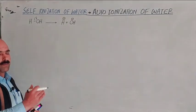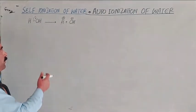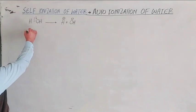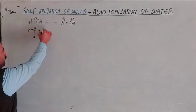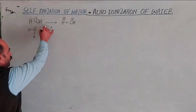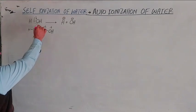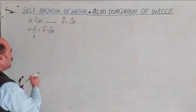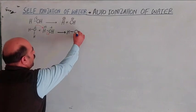Now, in one mole of water there are eighteen grams, and in one mole there is Avogadro's number of water molecules. Not all of them ionize simultaneously. Consider two water molecules. Due to polarity, hydrogen is partial positive and oxygen is partial negative. The lone pair electrons on oxygen of one water molecule attack the partial positive hydrogen of another water molecule, breaking that bond.